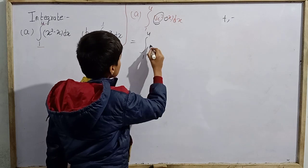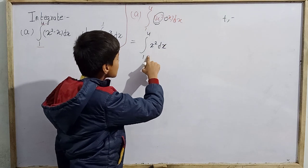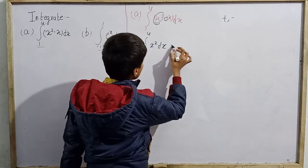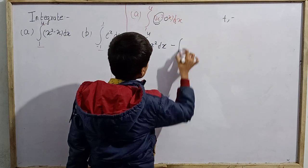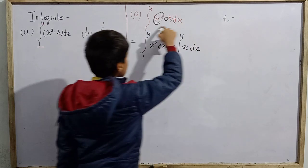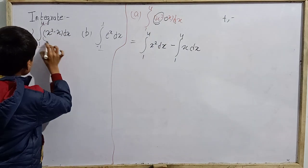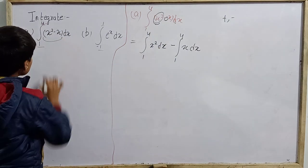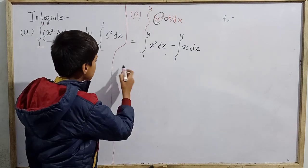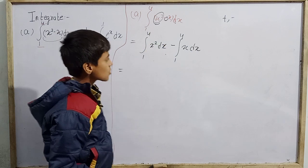So this becomes: integral from 1 to 4 of x² dx minus integral from 1 to 4 of x dx. We put brackets to keep things clear, and then we integrate x² dx easily.